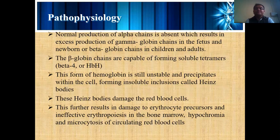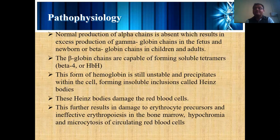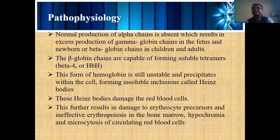The normal production of the alpha chain is absent, which results in excess production of gamma globulin chains in the fetus and newborn, and beta globulin chains in children and adults. The beta globulin chain is capable of forming a soluble tetramer called beta-4, or HbH.